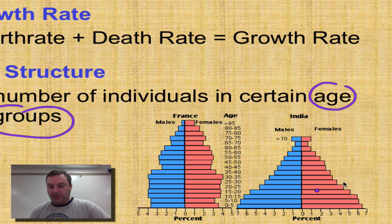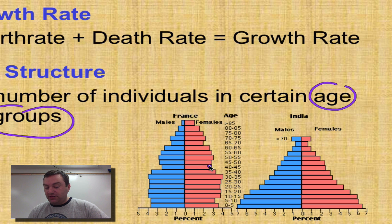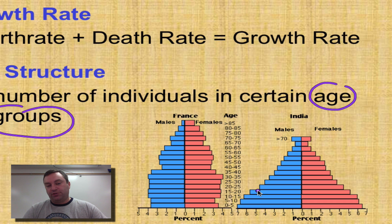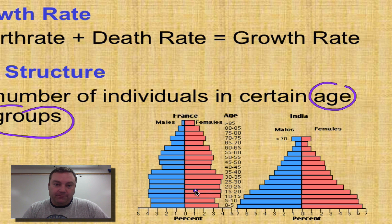An age structure diagram looks like what you see here. Looking at France: in the zero-to-five age range there are so many females and so many males. In the forty-to-forty-five range they have noticeably fewer, and then they kind of recover at the higher age groups. What this is showing is a population that's pretty stable — it's not really growing. At each regular age group we essentially just have replacements, so as older individuals pass away they're simply being replaced by babies.